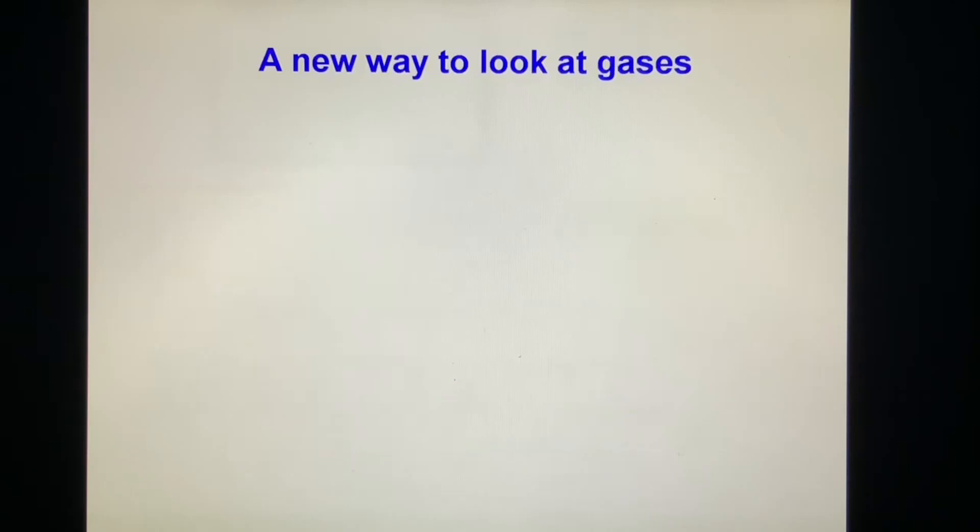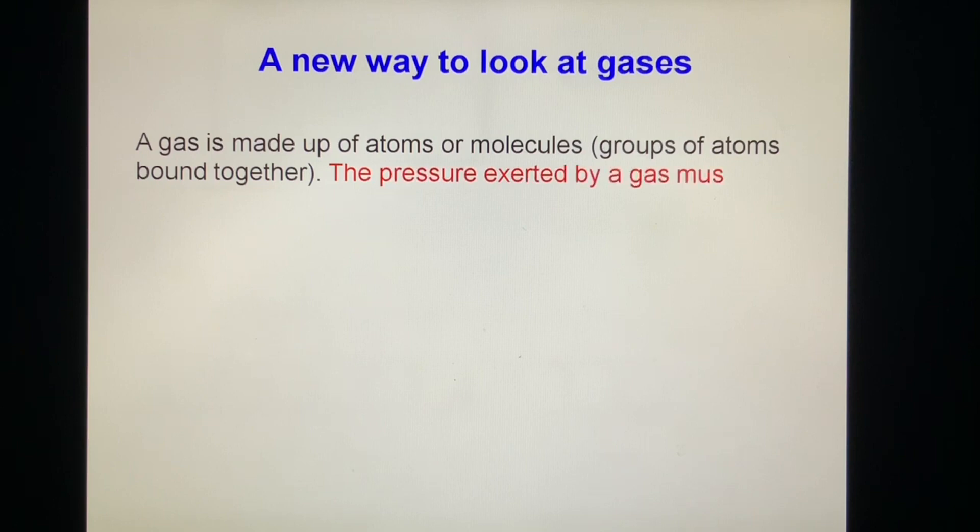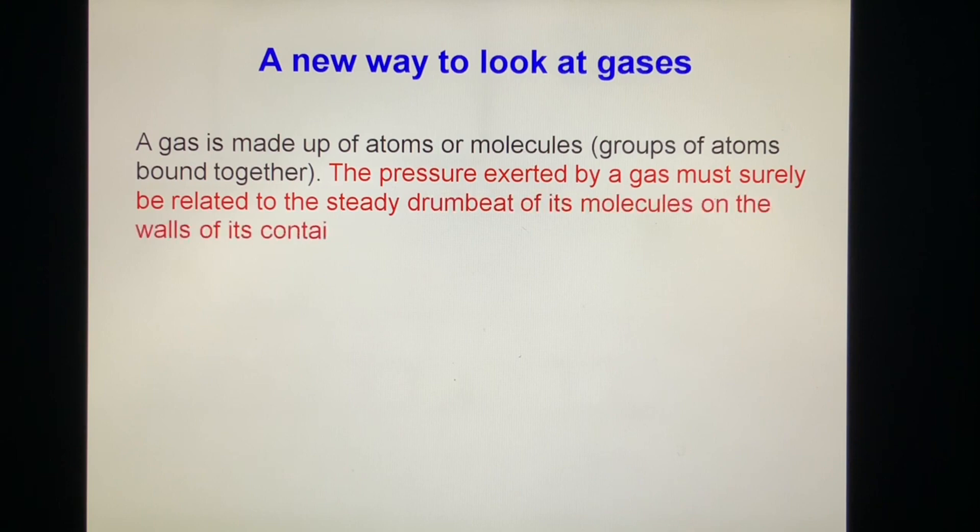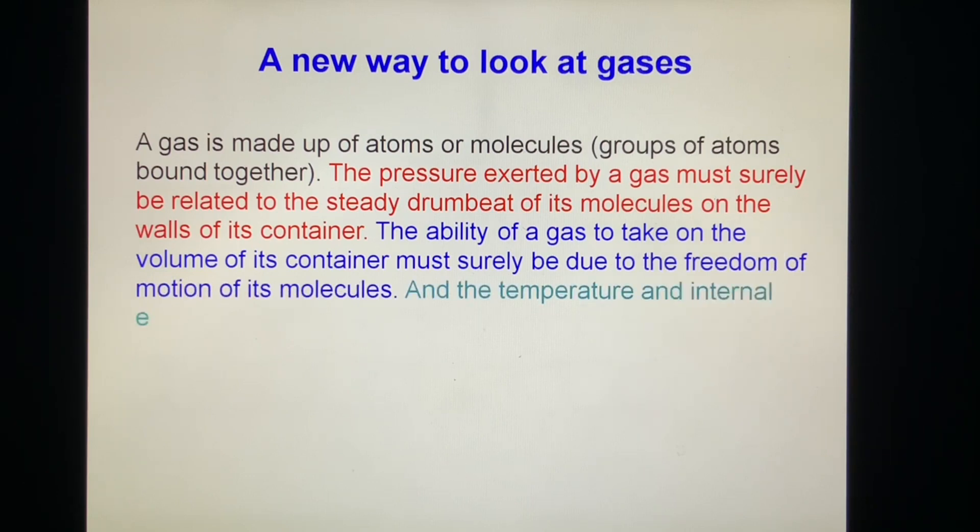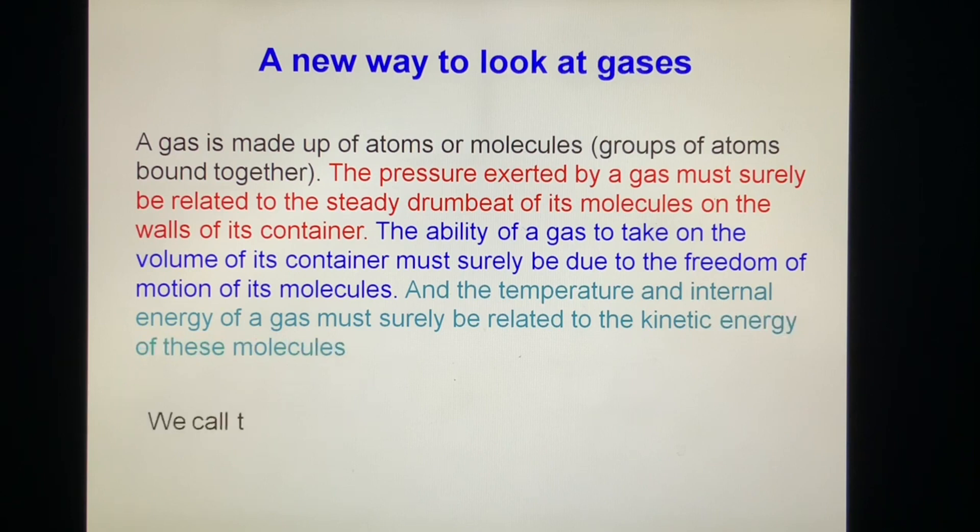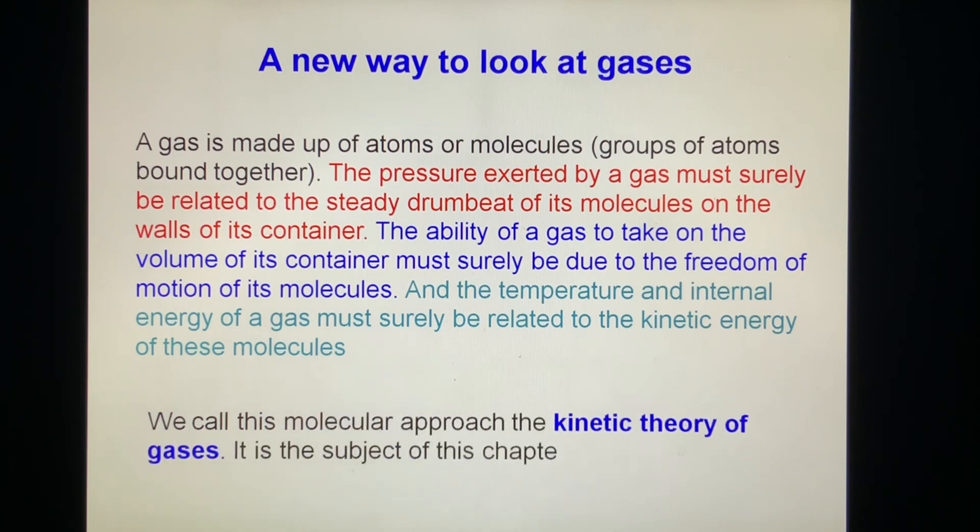A new way to look at gases. A gas is made up of atoms and molecules, groups of atoms bound together. The pressure exerted by a gas must surely be related to the steady drumbeat of its molecules on the walls of its container. The ability of a gas to take on the volume of its container must be due to the freedom of motion of its molecules, and the temperature and internal energy of a gas must be related to the kinetic energy of its molecules. We call this molecular approach the kinetic theory of gases. This is the subject of this chapter.